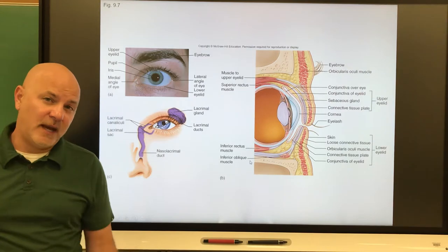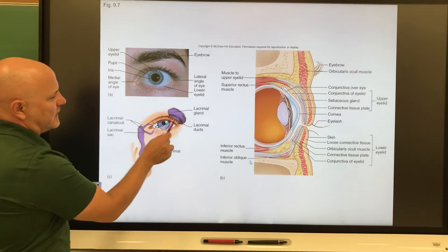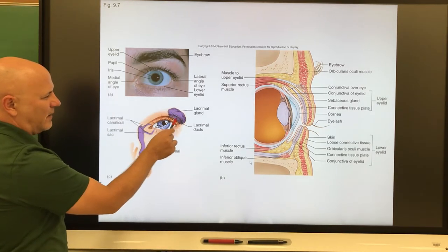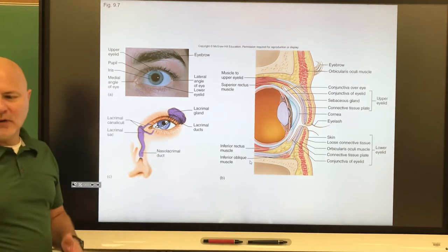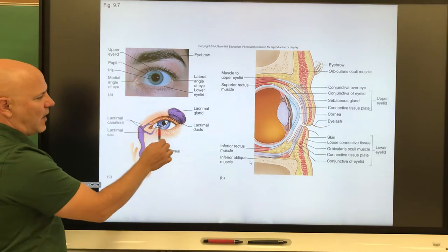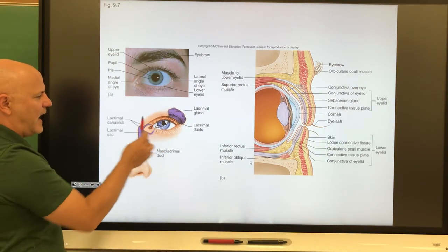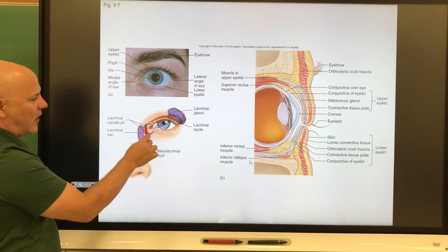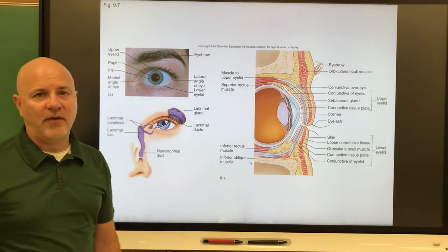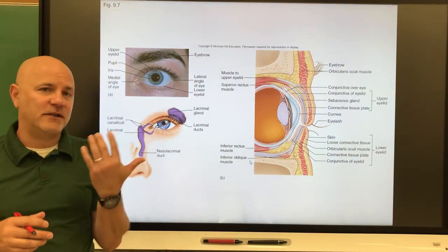Next are lacrimal glands. You can see the location here, superior and lateral to our eyes. Lacrimal glands secrete tears. They constantly produce tears, and this arrow shows you the direction in which those tears move. They wash across our eye and then they drain out of our eye down, and they actually end up into our nasal cavity.